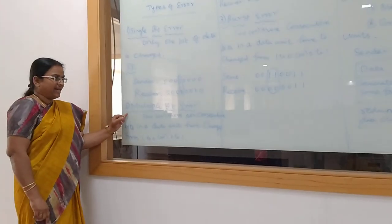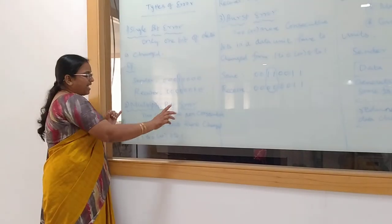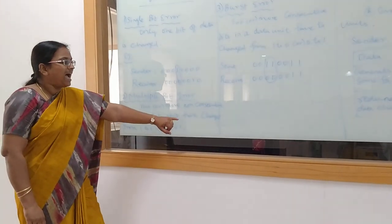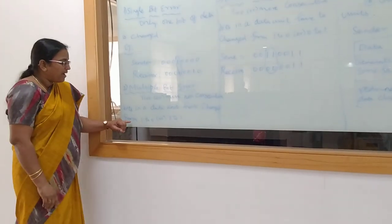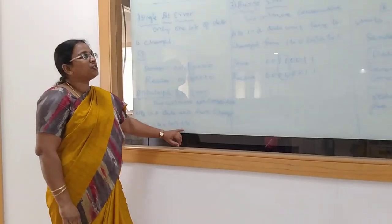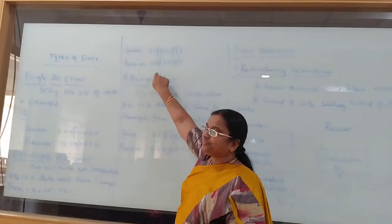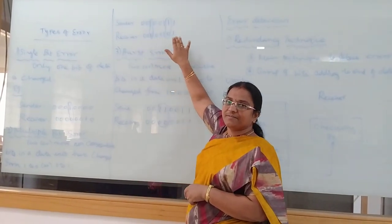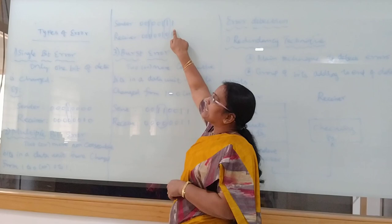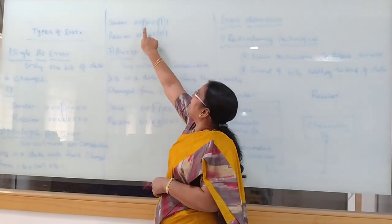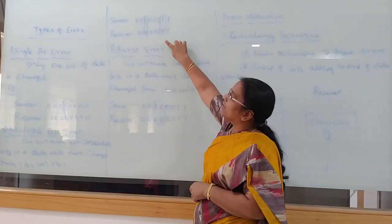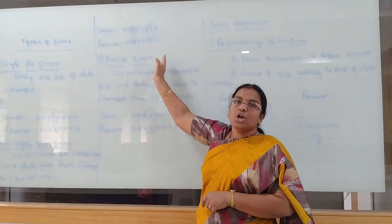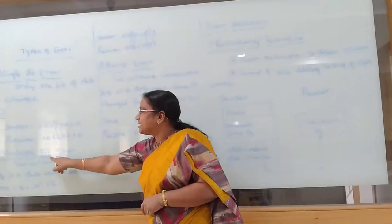The second type is multiple bit error. Two or more non-consecutive bits in a data unit have changed — from 1 to 0 or 0 to 1. For example, the sender may send this data and the receiver receives this data. Here non-consecutive data is changed: a 1 is changed to 0 in one position and another 1 is changed to 0. So this type of error, where 2 or more non-consecutive bits are changed, is called multiple bit error.